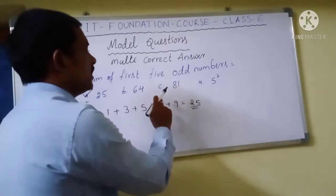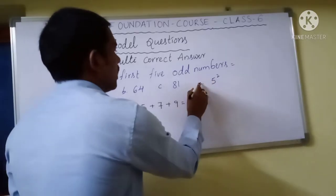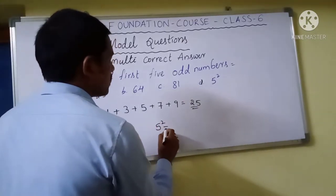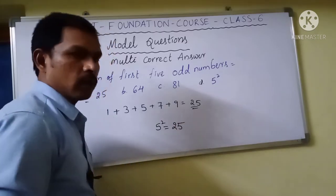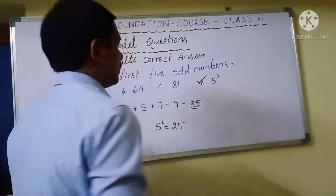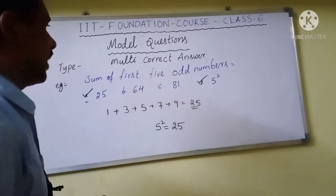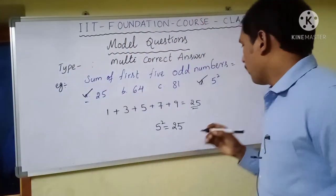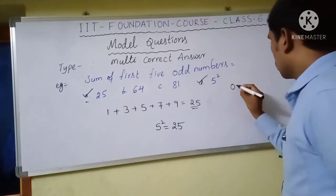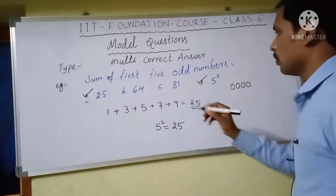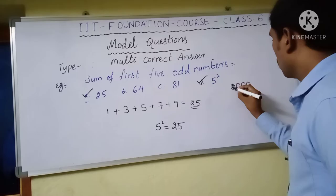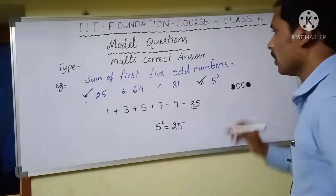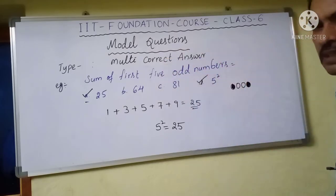The answer 25 equals 5 squared, so both the numerical answer and the perfect square expression are correct options — you should fill both Option A and Option D as correct. This is the Multi Correct Answer type, where you bubble multiple correct answers when they give such options.